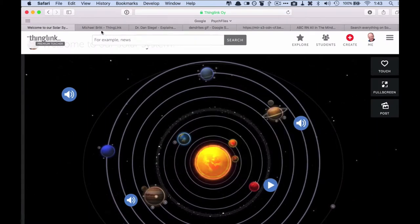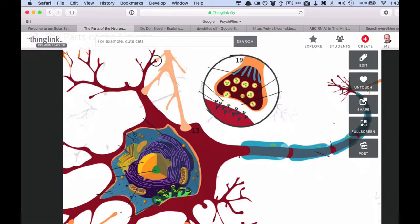Let me show you a couple that I made. So I've got a few of them, but I think one of the ones I like the most is the parts of the neuron. This is an image that I got in Wikipedia. When you roll over the image, you can see all these little tags that I've put on top of the image.